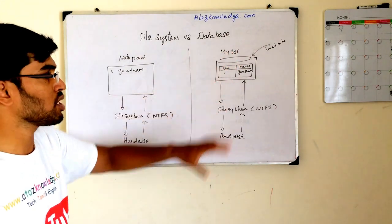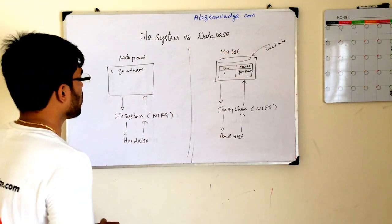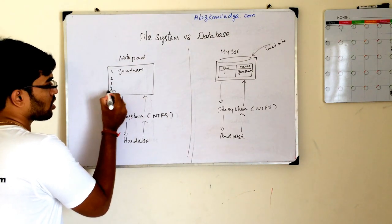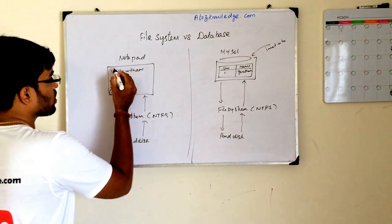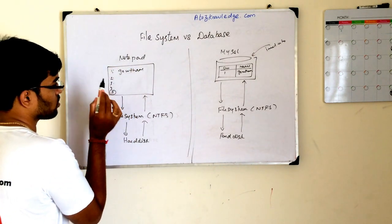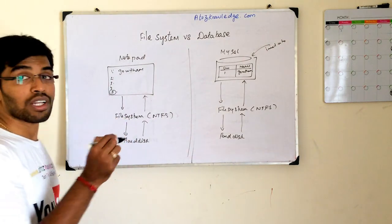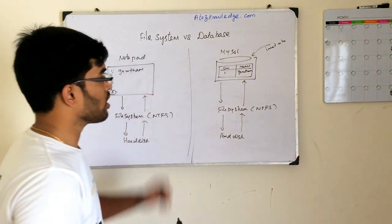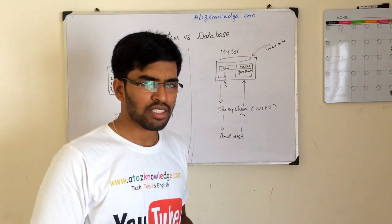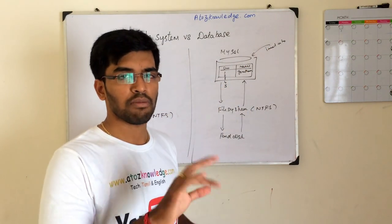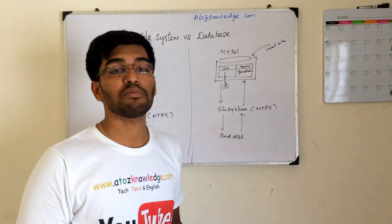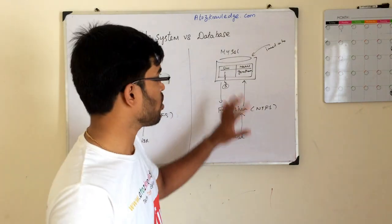We have many other differences too. For example, if you have five records in a file system and want to retrieve the fifth record, it searches sequentially: it checks record one — not five — then two, three, four, and finally fetches the fifth. There is no random read/write. But in a database, you can do: SELECT * FROM table WHERE serial_number = 5, and it goes directly to that record. Databases support random read/write.